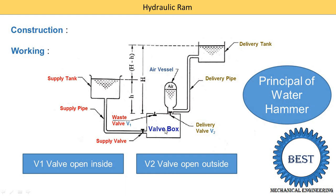When the pressure rises suddenly in the valve box, the delivery valve V2 opens. The delivery valve connects the valve box and the air vessel. So when the delivery valve is open, the water from the valve box with high pressure is supplied into the air vessel.